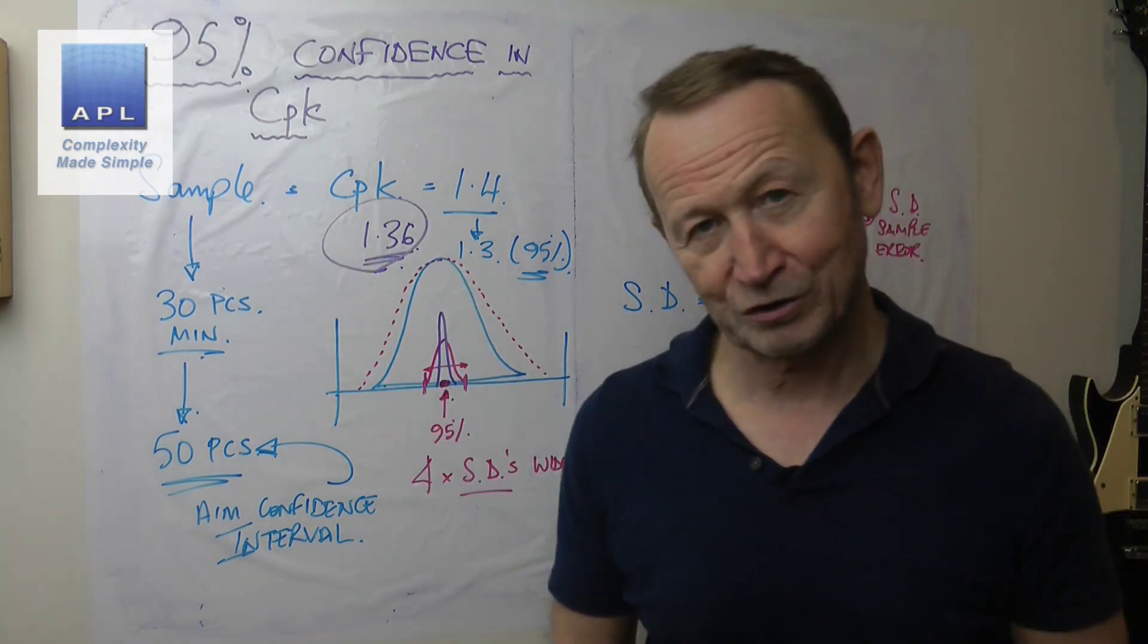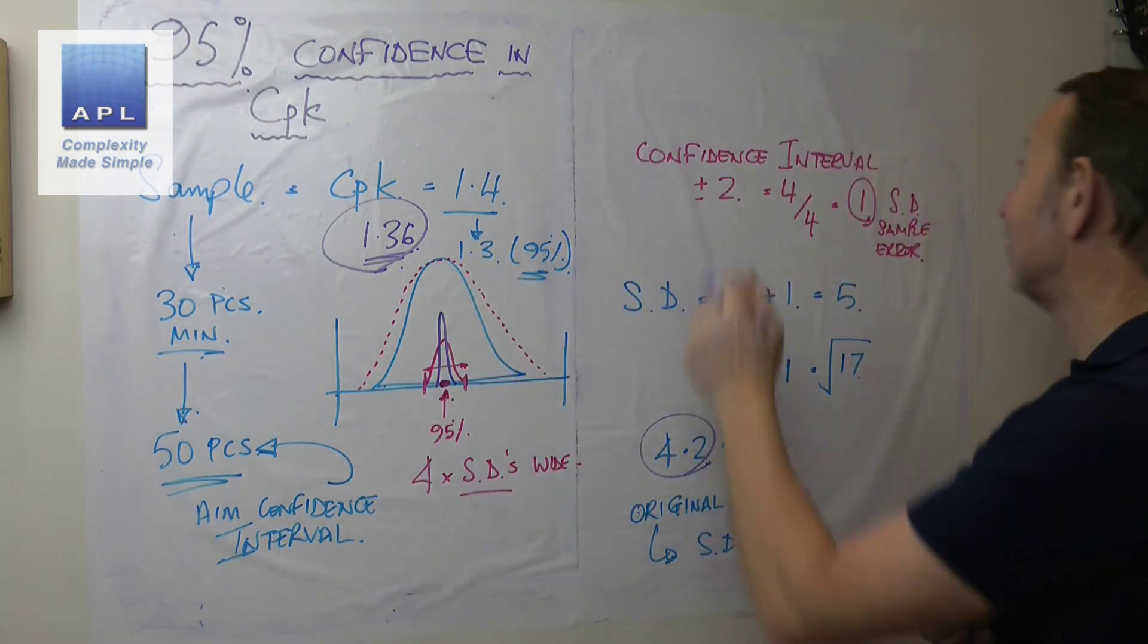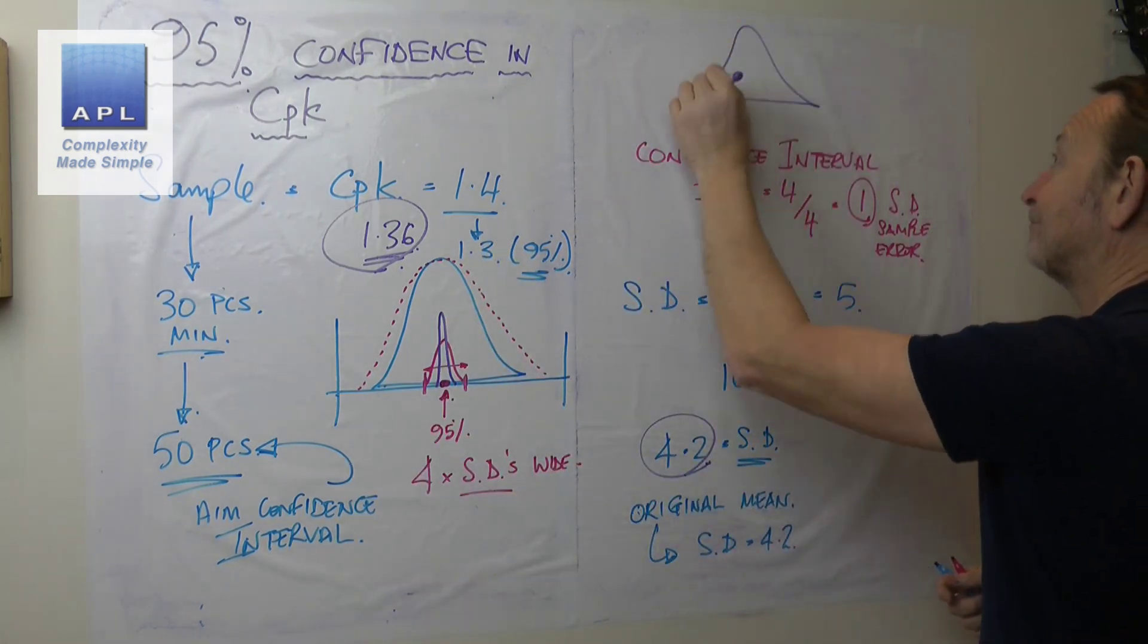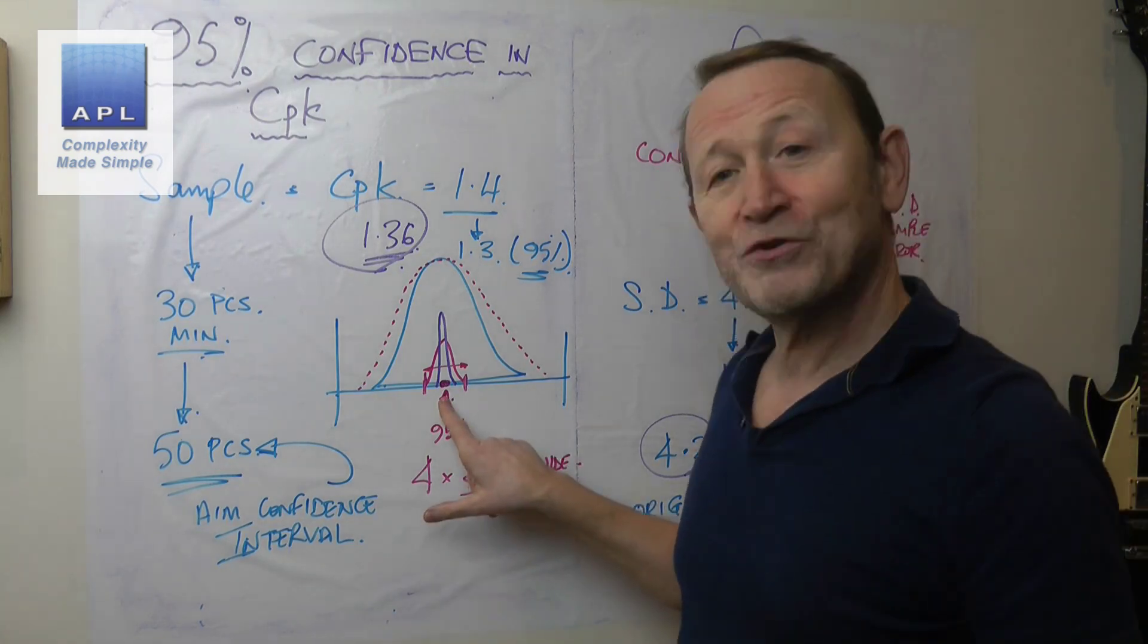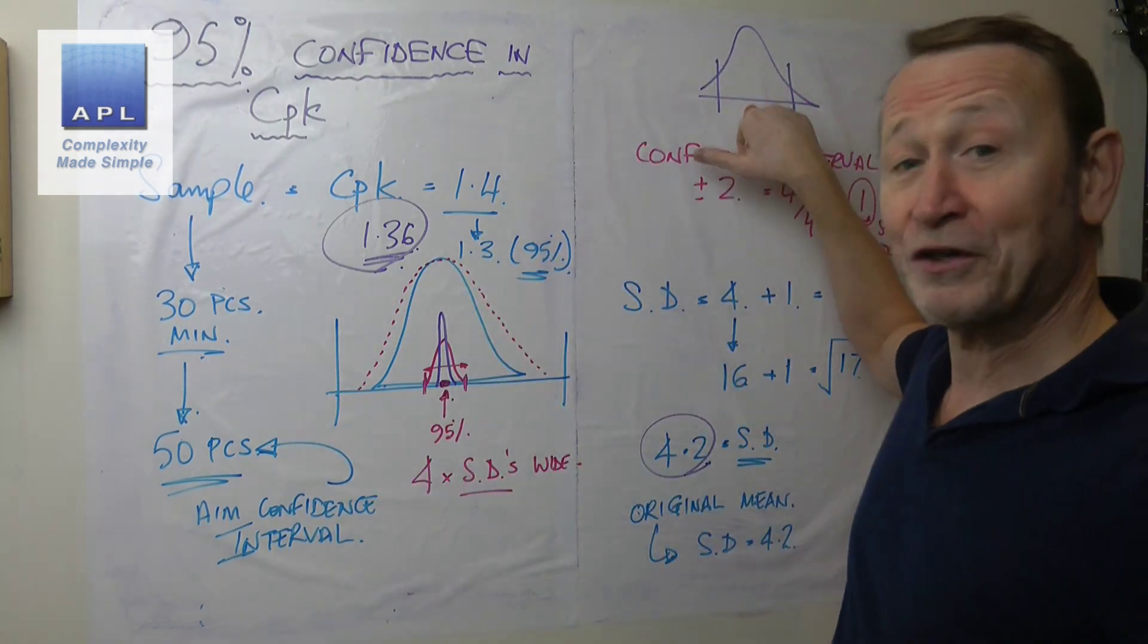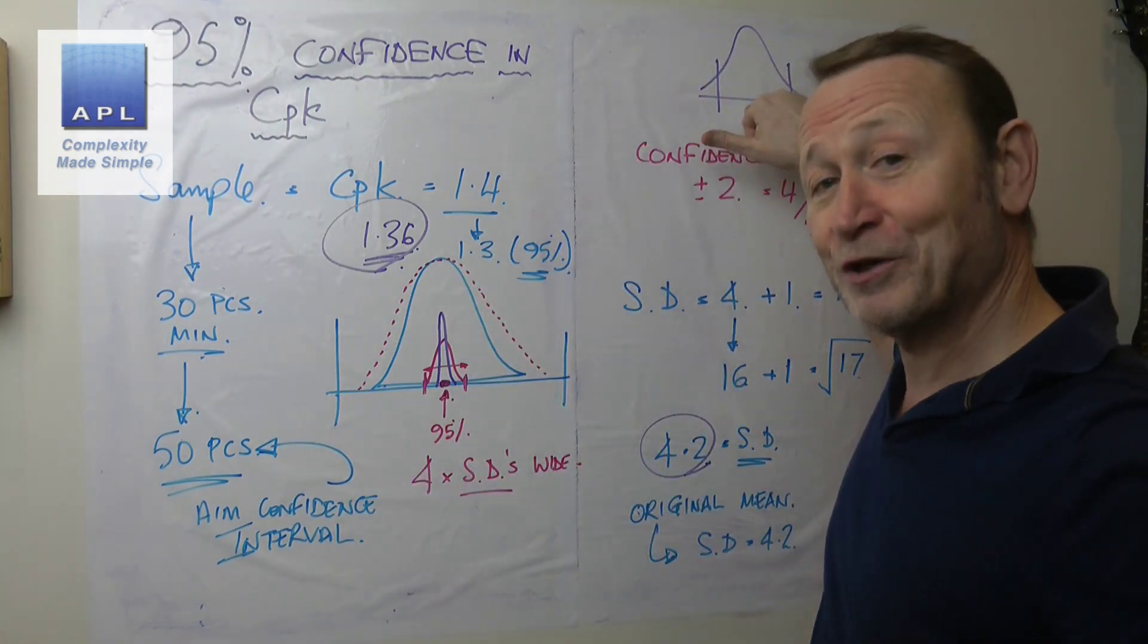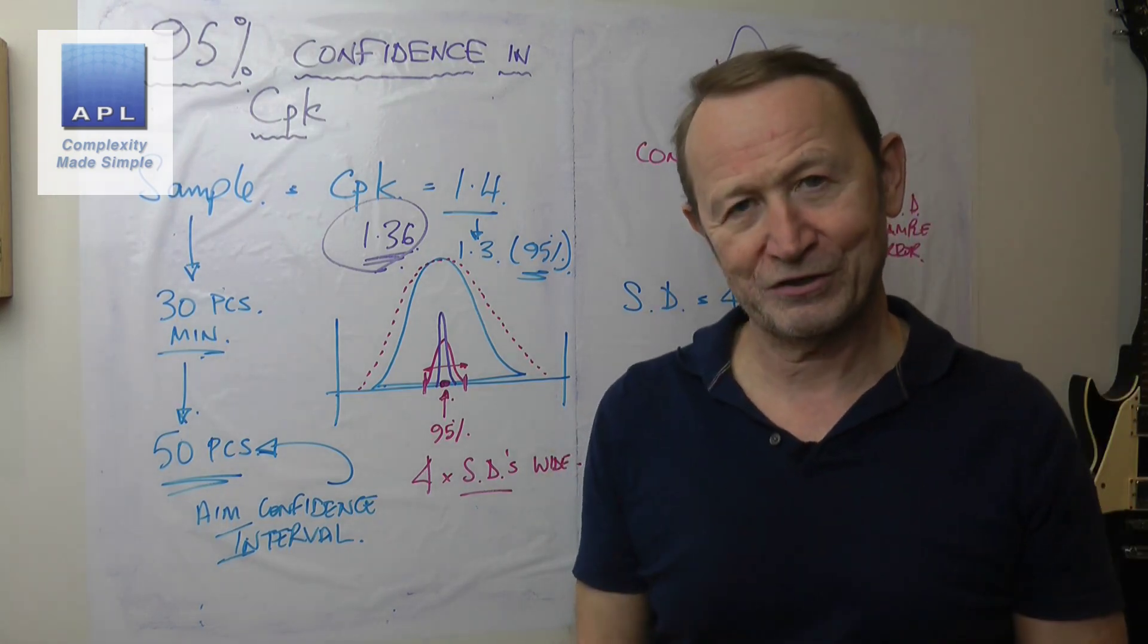Obviously, if your CPK is a disaster—in other words, if it's like that—reducing the sampling error isn't going to solve your problem. By the way, you'd still be 95% confident that that's what's going on, but of course what have you got to do? You've got to work on the process.